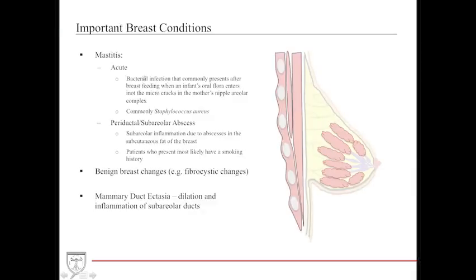For benign breast conditions, mastitis is an inflammation of the breast tissue that can be acute and is most likely caused by bacterial infection, usually staph. It commonly presents in women who are breastfeeding, as the infant causes microfractures in the nipple areolar complex allowing oral flora to enter and proliferate. Another type is periductal or subareolar mastitis, where abscesses arise in subcutaneous fat — not necessarily in microcracks or ducts — and has a propensity to occur in smokers.